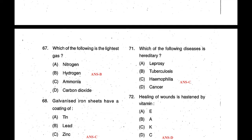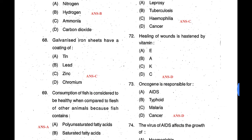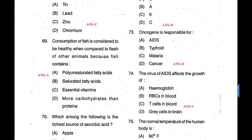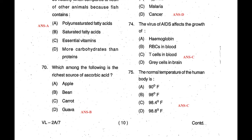Question 67: The lightest gas is hydrogen — answer is B. Hydrogen balloons can go to a very high height because of the lightness. Question 68: Galvanized iron should have a coating of zinc — that process is called galvanization. Question 69: Consumption of fish is considered healthy compared to other animal meat because fish contains polyunsaturated fatty acids — answer is A. Question 70: The richest source of ascorbic acid — answer should be D, which is guava.